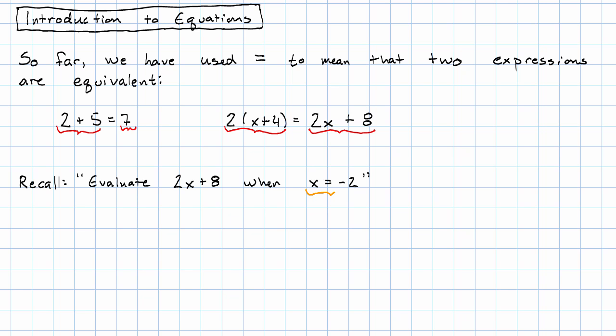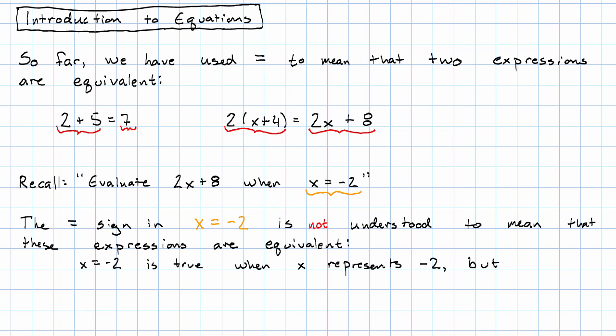This equals sign is used in a different way. We're not saying that the expression x and the expression -2 are equivalent. After all, x equals -2 happens to be true when x represents the number -2, but it's false if x represents, for example, the number 7. That's not how we understand the statement x equals -2.